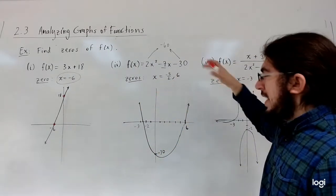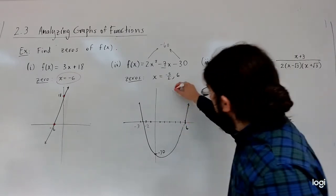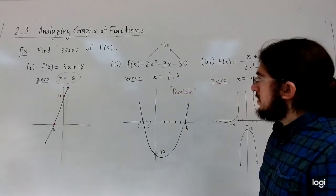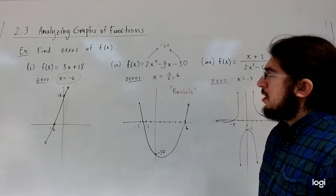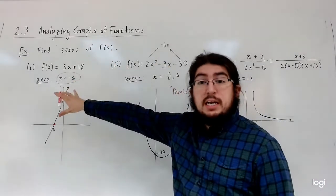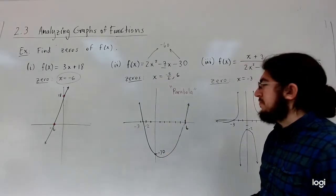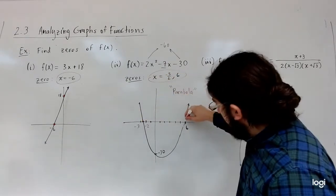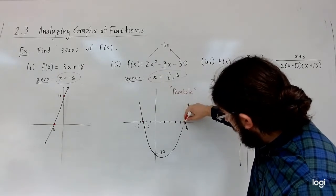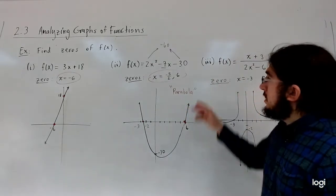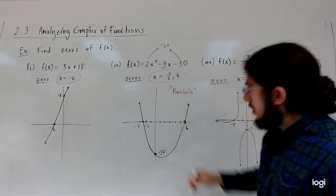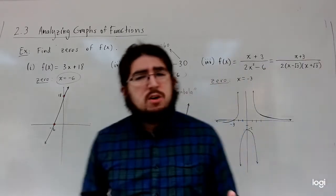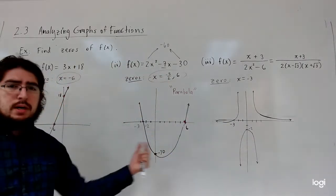This next one is quadratic. As it turns out, all quadratic functions have graphs that are parabolas — an opening-up U-shape. Every linear function has a graph that's a line, and every quadratic function has a graph that's a parabola. Looking at the zeros, x equals negative 5/2 and x equals 6 — we indeed get those as x-intercepts. The y-intercept is negative 30. The zeros correspond to the x-intercepts; that's the big takeaway.